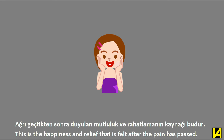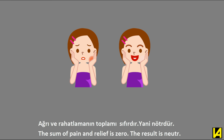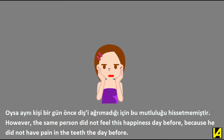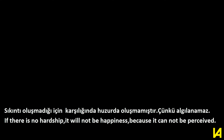In the face of the pain of someone suffering, fake happiness and comfort must reproduce. This is the happiness and relief felt after the pain has passed. The sum of pain and relief is zero — the result is neuter. However, the same person did not feel this happiness the day before because he did not have pain then. If there is no hardship, there will be no happiness, because it cannot be perceived.